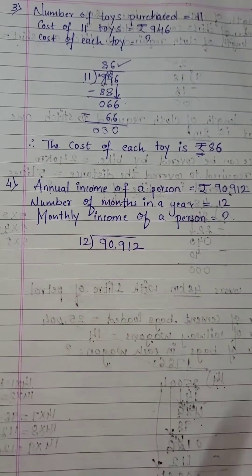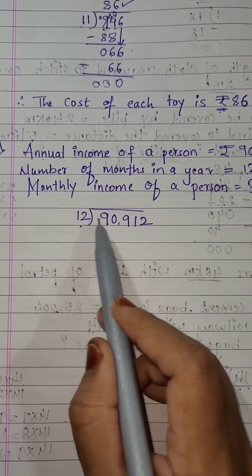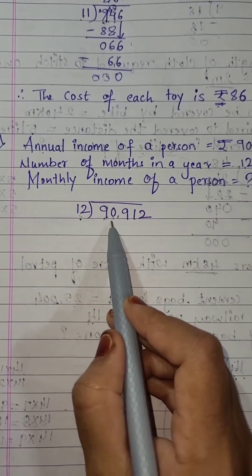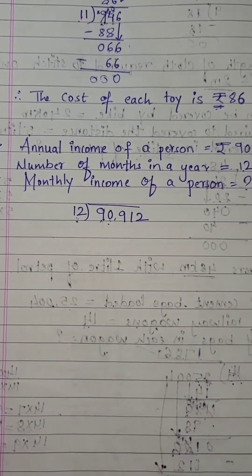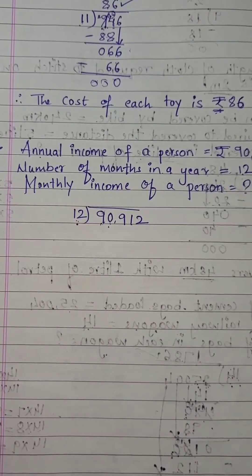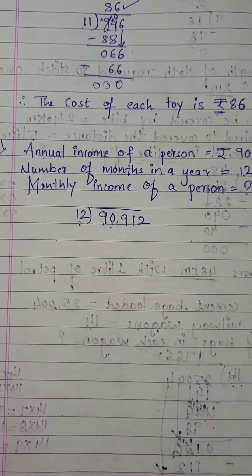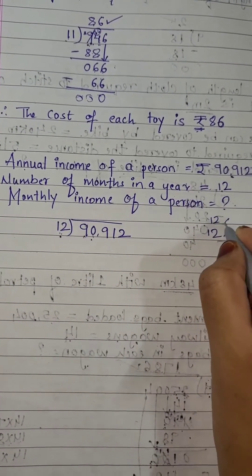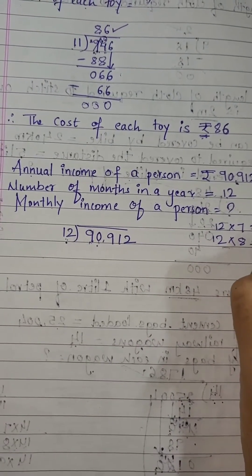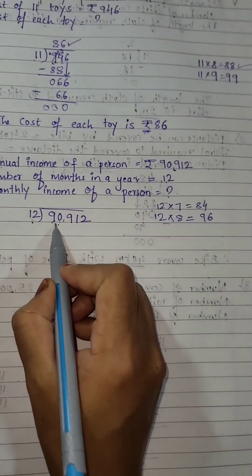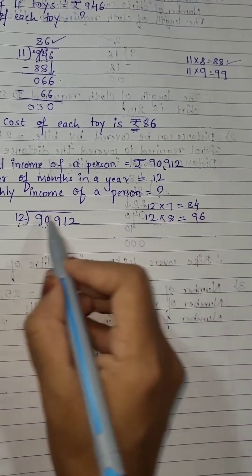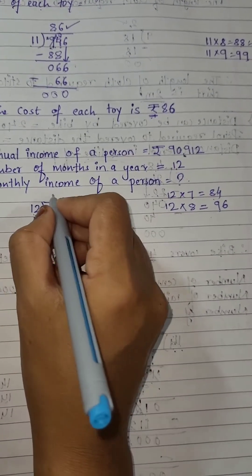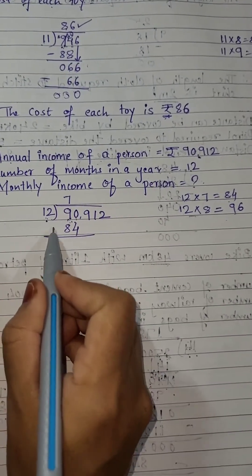Read the 12 times table till you get 9. You can't, because 9 is smaller than 12, so take 0 — it becomes 90. Reading the 12 table: 12×7=84, 12×8=96. Since 90 lies between 84 and 96, and 96 is bigger, take the lesser number — 84. So 12×7=84. Subtract: 0 minus 4 is not possible, borrow — becomes 10. 10 minus 4 is 6. Next, 8 minus 8 is 0.